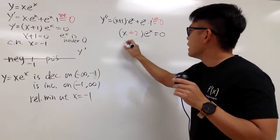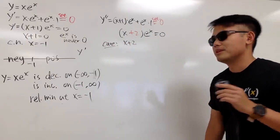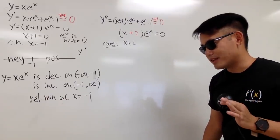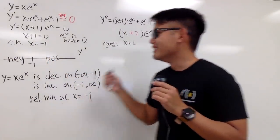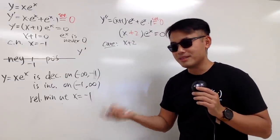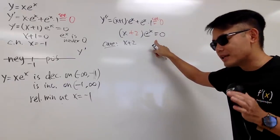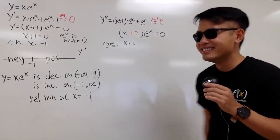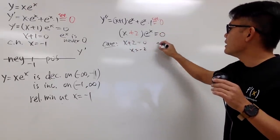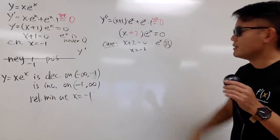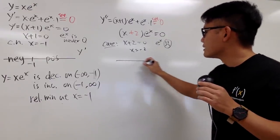I'll just note that I 'care' about x + 2 = 0 — meaning x = negative 2 — because the second derivative being 0 doesn't automatically mean it's a point of inflection; I need to verify. And again, e to the x is always positive and never 0. So now I'll do a second derivative sign chart with the value x = −2.